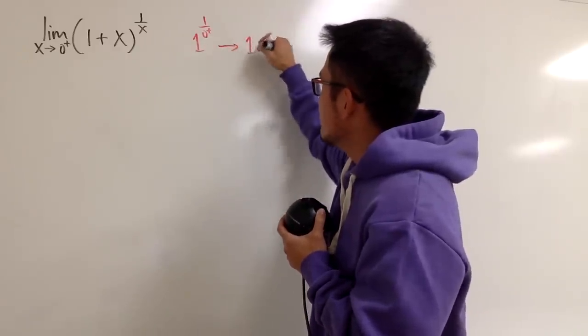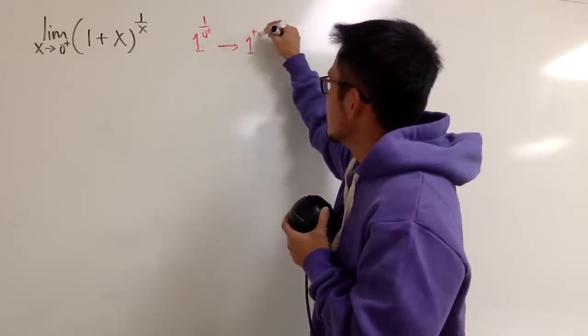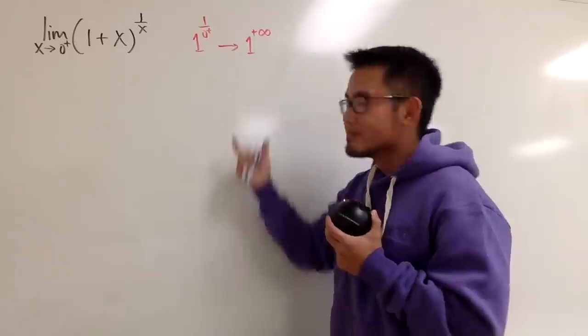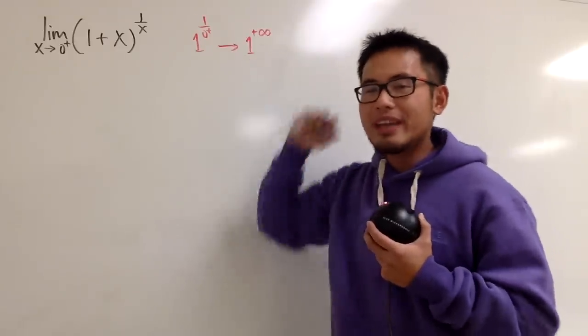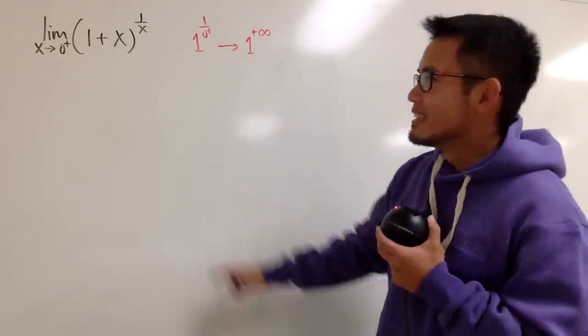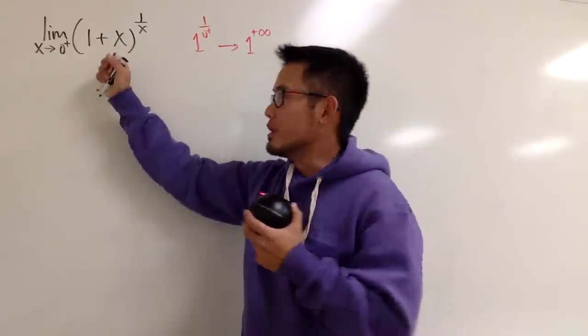So this is 1 for the base, raised to the positive infinity's power, right? This right here, we cannot draw any conclusion. Now, let's take a look at how can we solve this.